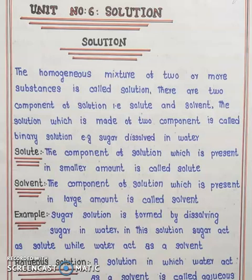What is solute? The component of solution which is present in a smaller amount is called solute. What is solvent? The component of solution which is present in a large amount is called solvent. For example, sugar solution is formed by dissolving sugar in water. In this solution, sugar acts as solute while water acts as solvent.